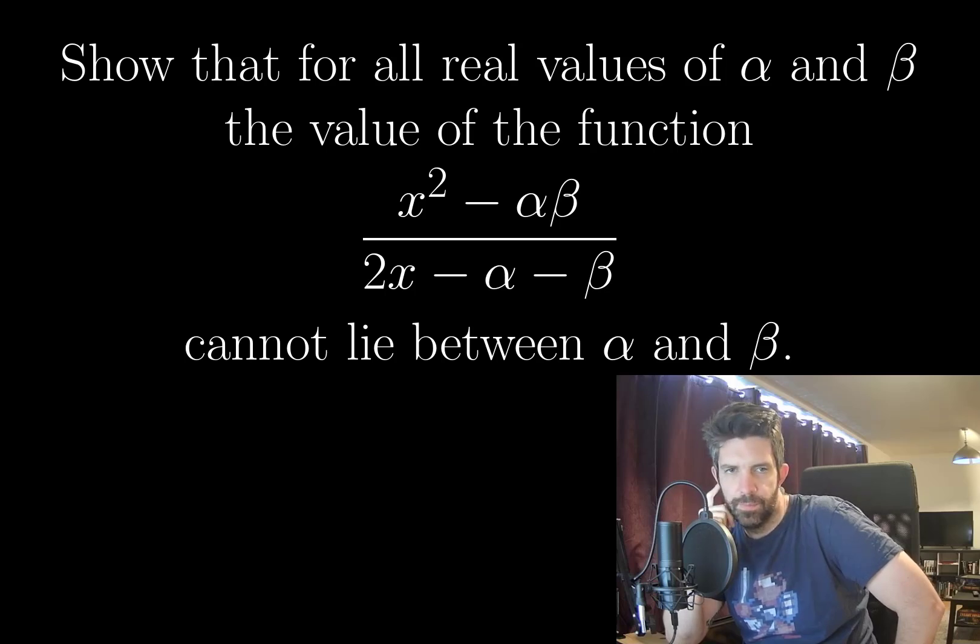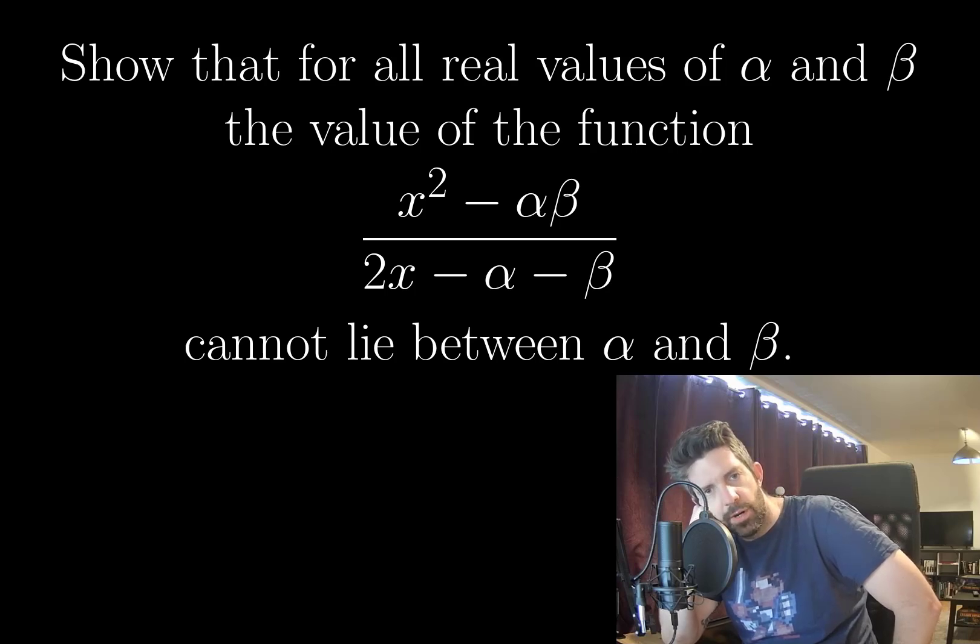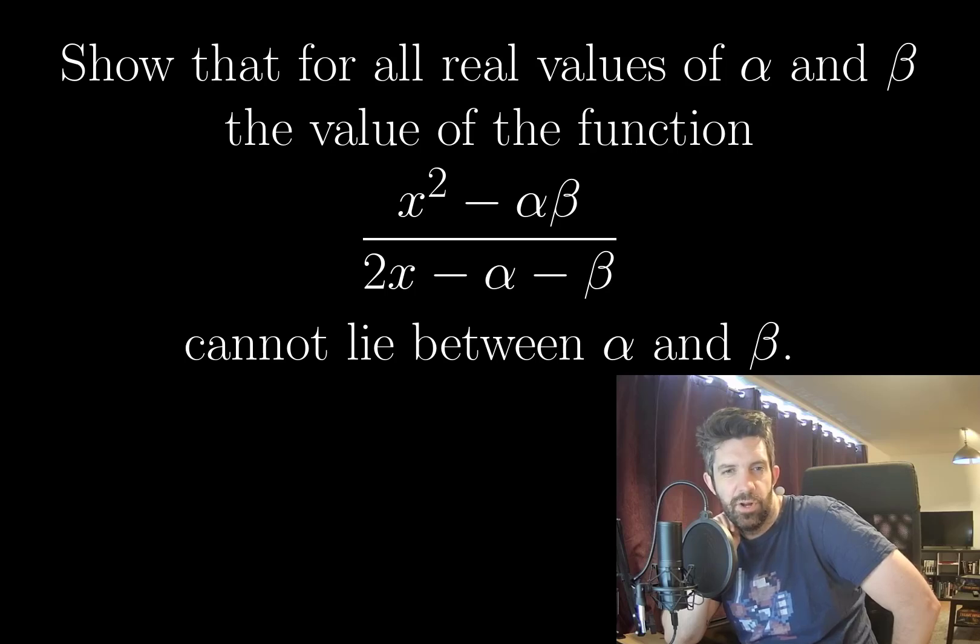Okay, so I think this is going to have something to do with the sign of, well, I mean I notice at the top that in the numerator I have a product of alpha and beta subtracted from x squared. And in the denominator I have the sum of alpha and beta subtracted from 2x.